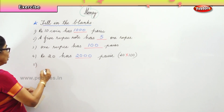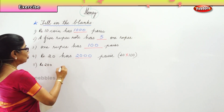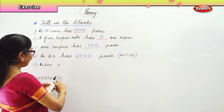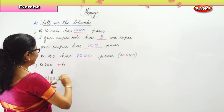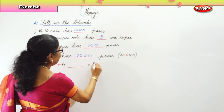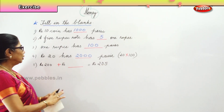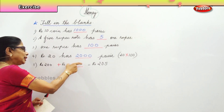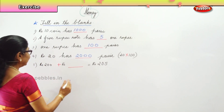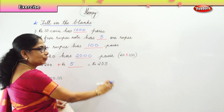Now let's look at another sum. You have a 200 rupee note. Rupees 200 plus something will give you rupees 205. What must be added to 200 to get 205? Rupees 5. So 200 plus 5 gives you rupees 205.